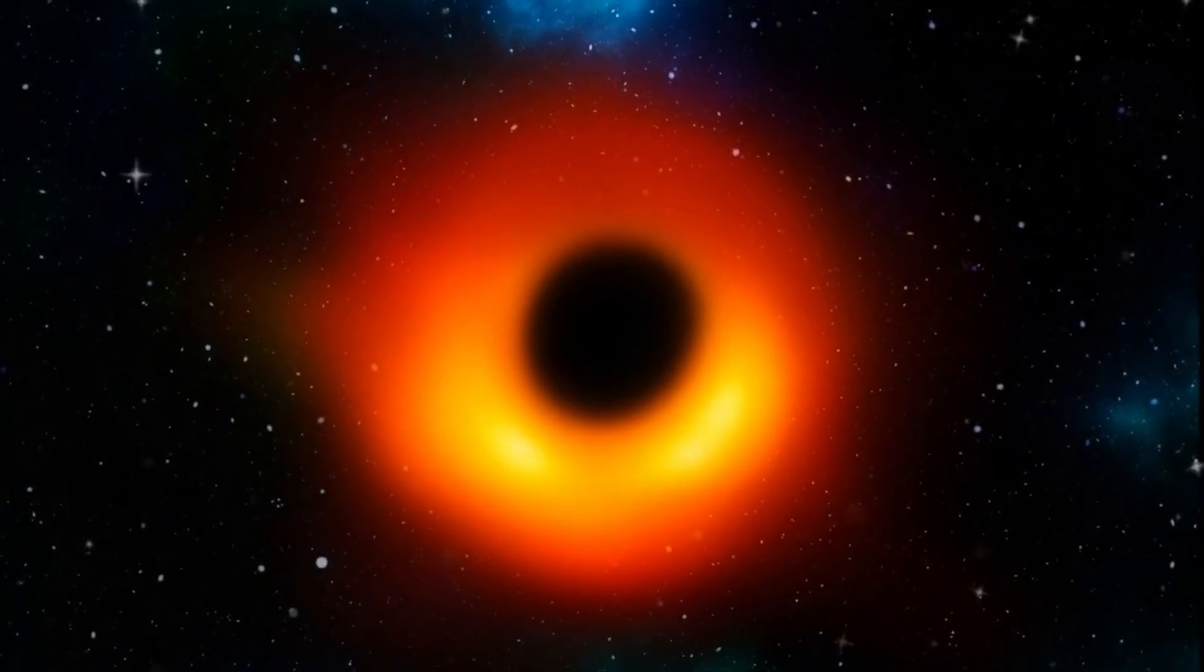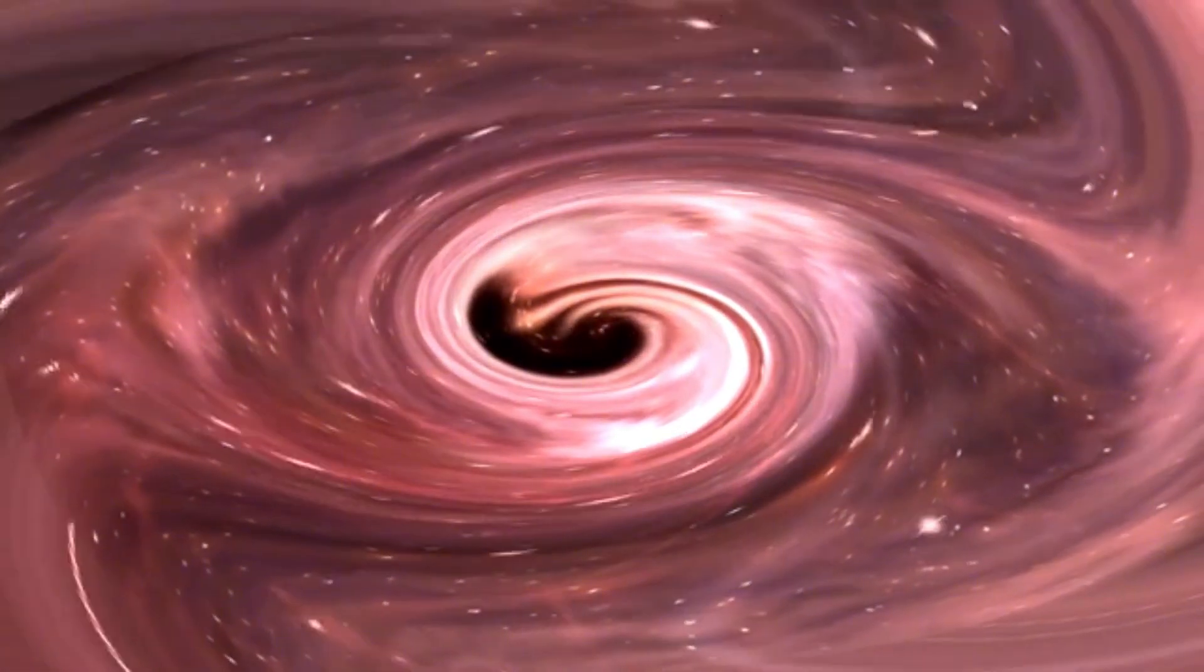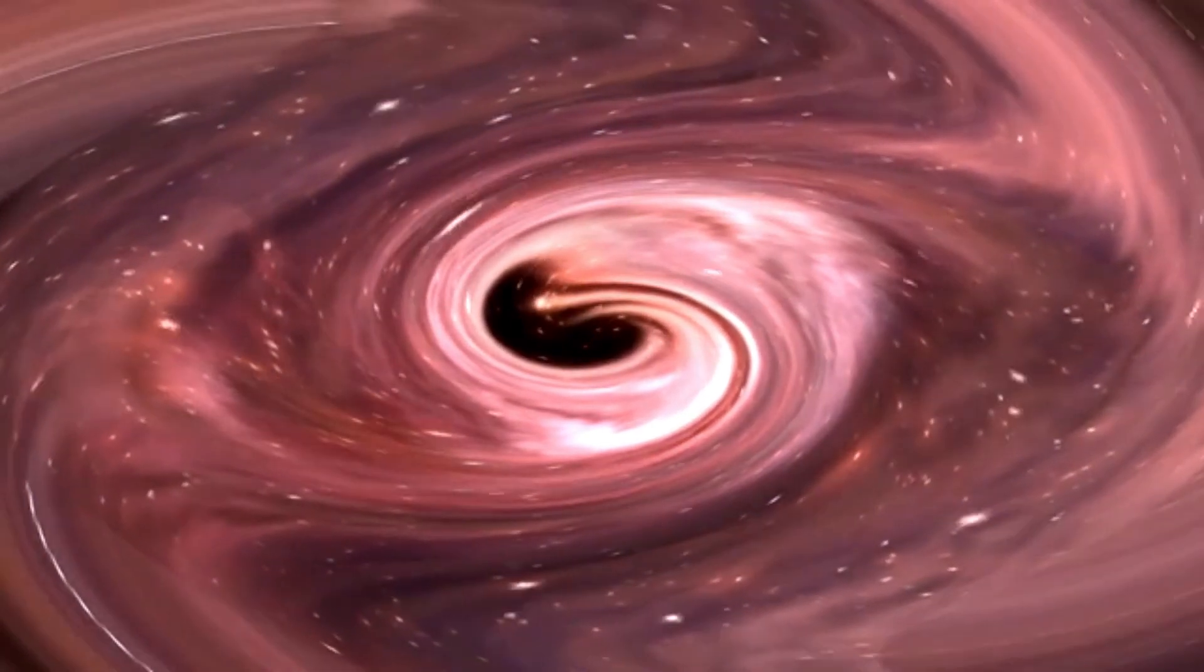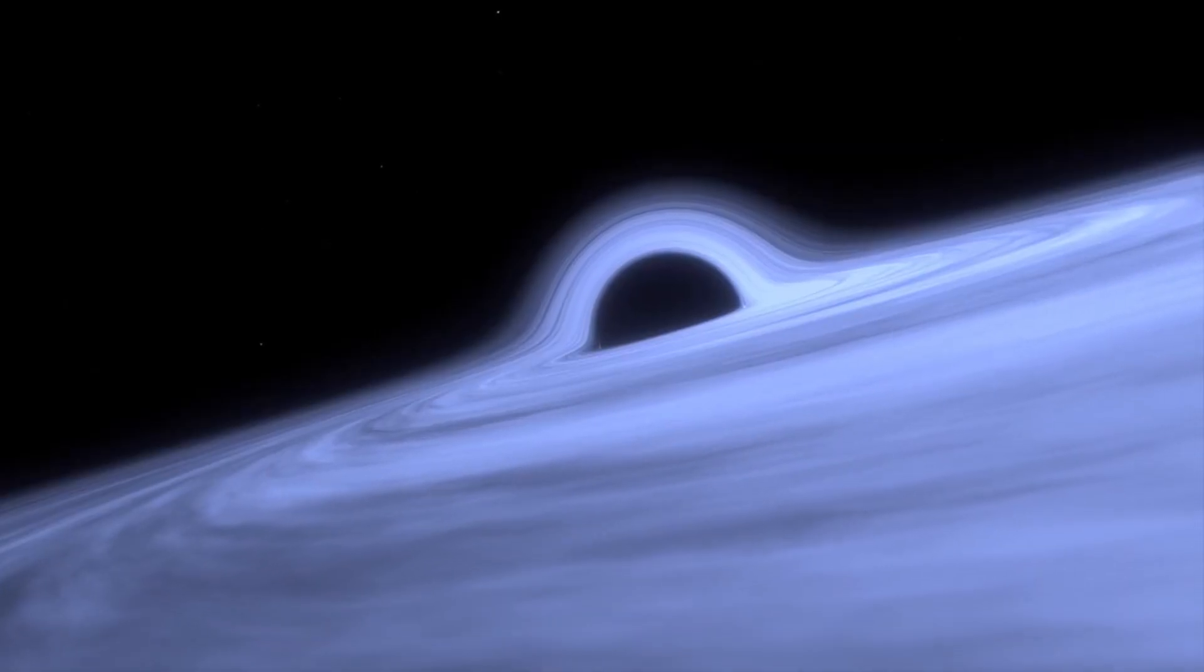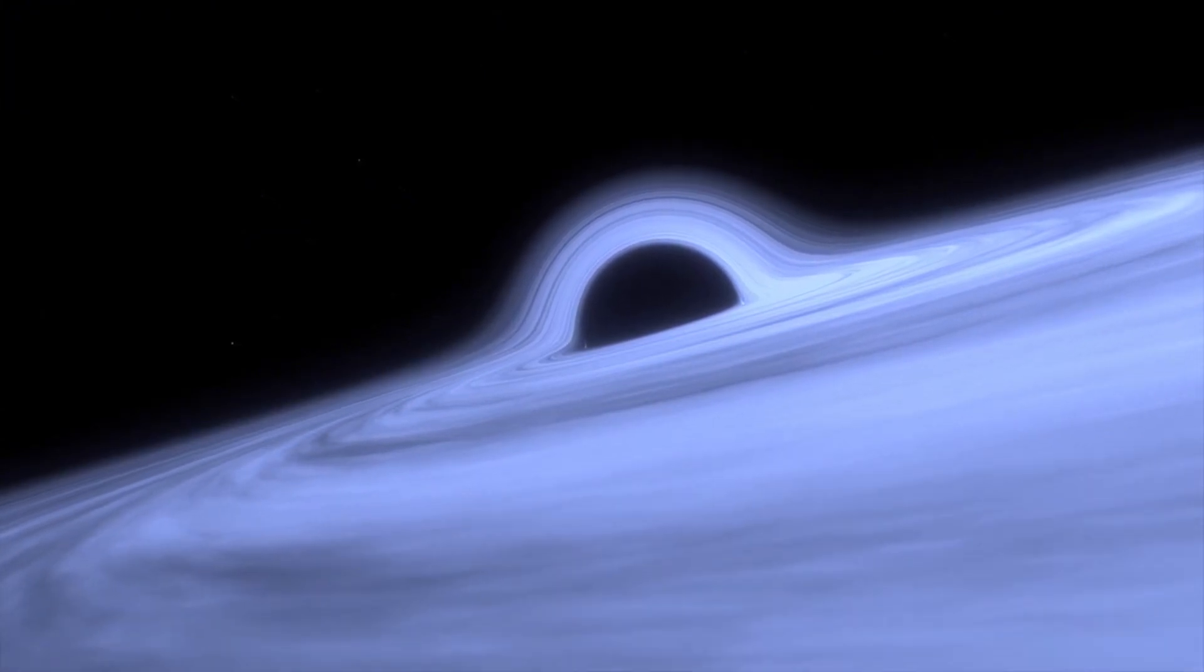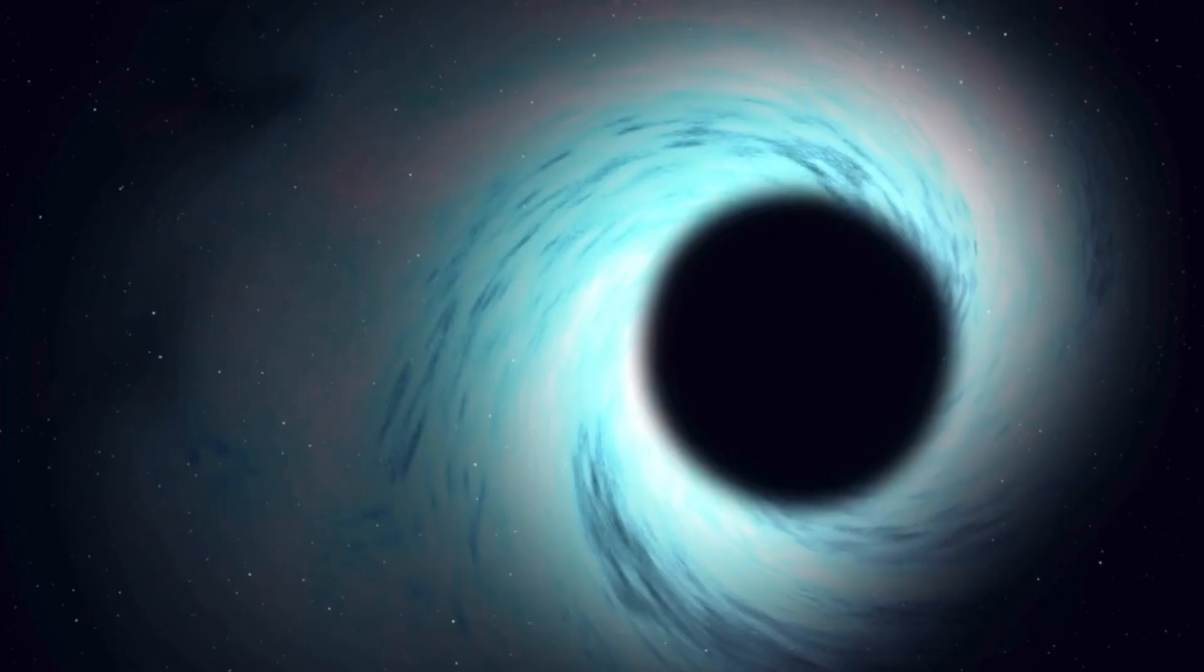Detecting black holes is no easy task since they don't emit any light. However, scientists have found ways to infer their presence by observing their effects on nearby matter. For example, if a black hole passes through a cloud of interstellar matter, it'll pull the matter towards it in a process called accretion. When a normal star gets too close to a black hole, it can get torn apart, emitting x-rays as it does so.